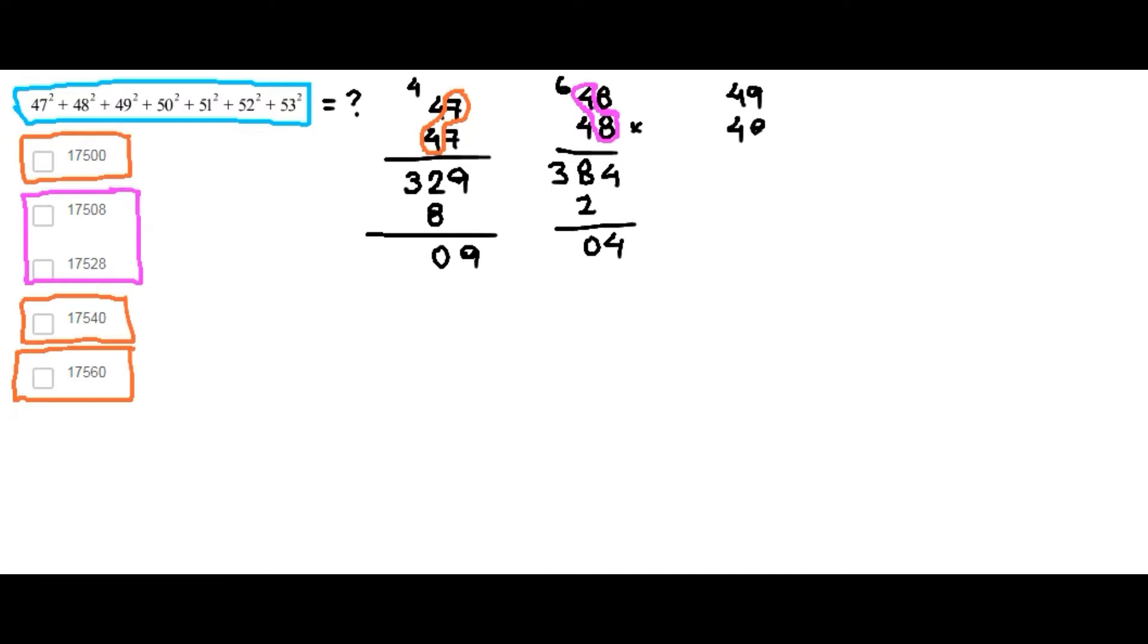Same with 49. So, here we have 81. 8 here. 4 times 9 is 36 plus 8 is 44. Here, 6. So, again, 1 and 0.